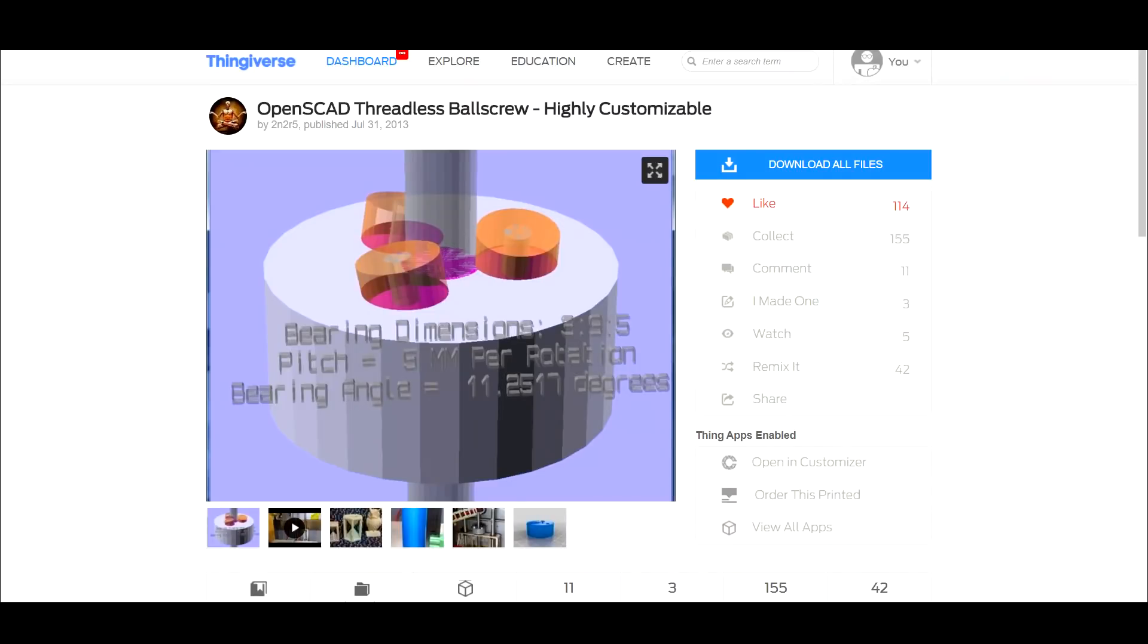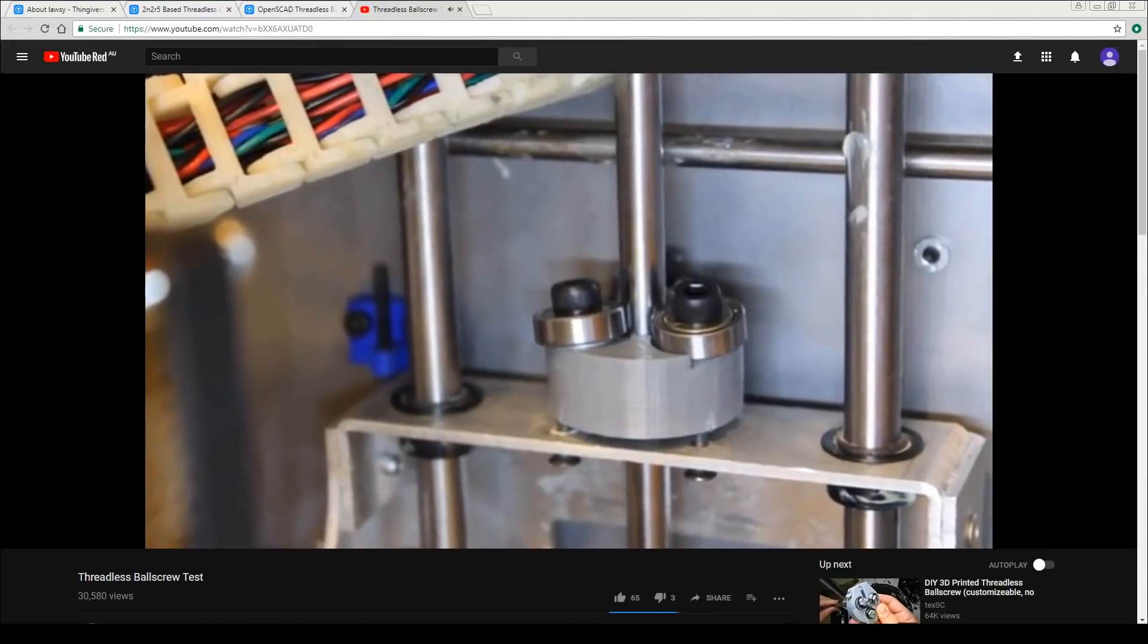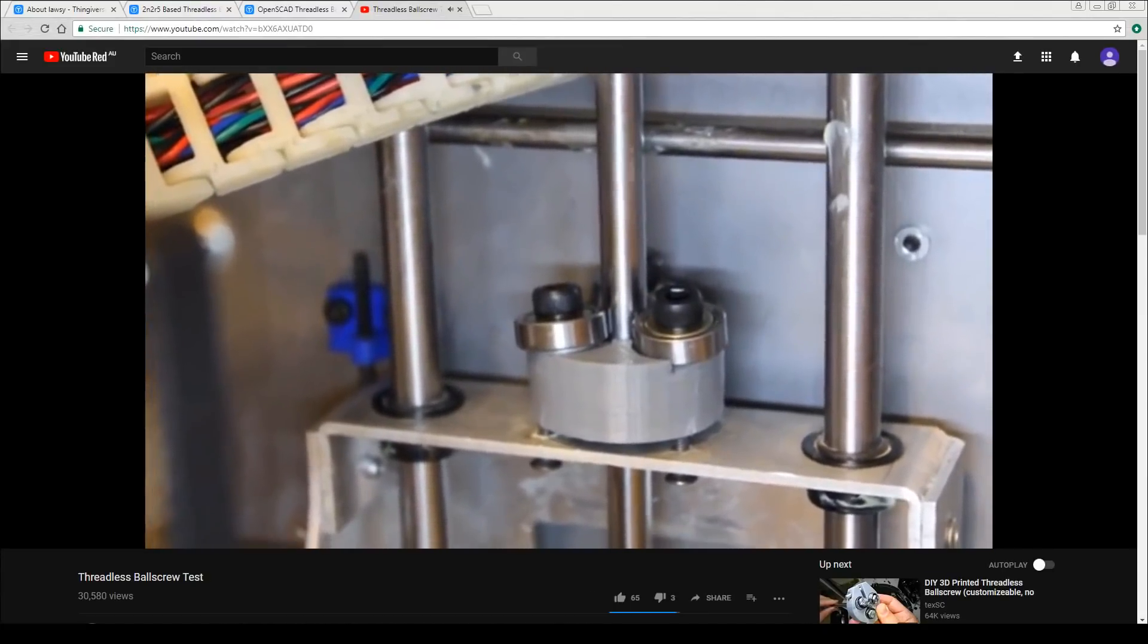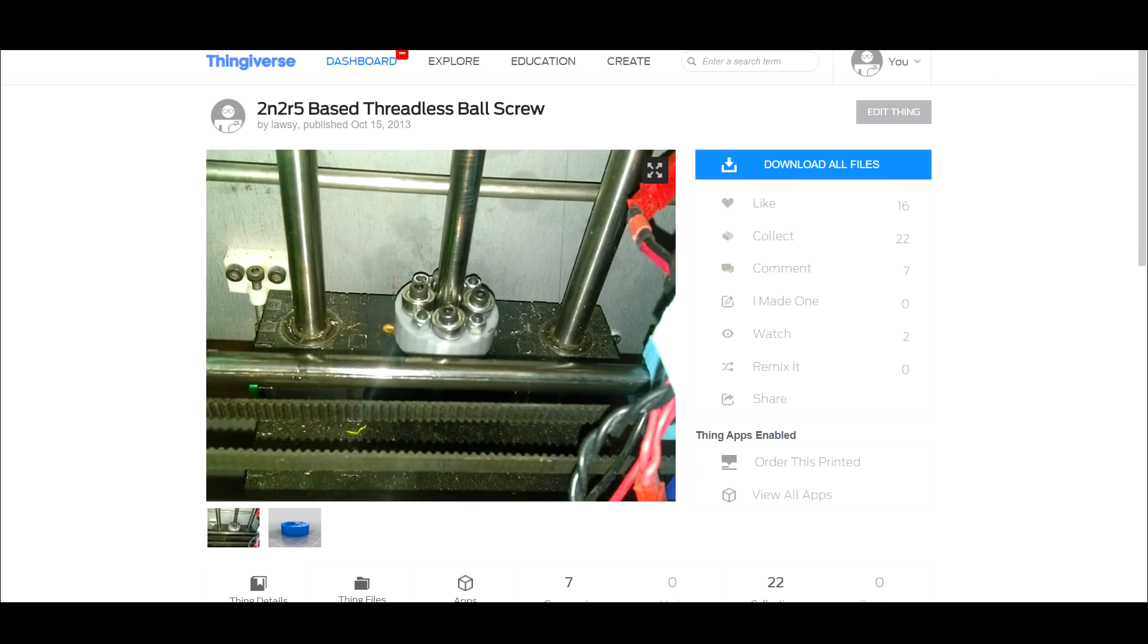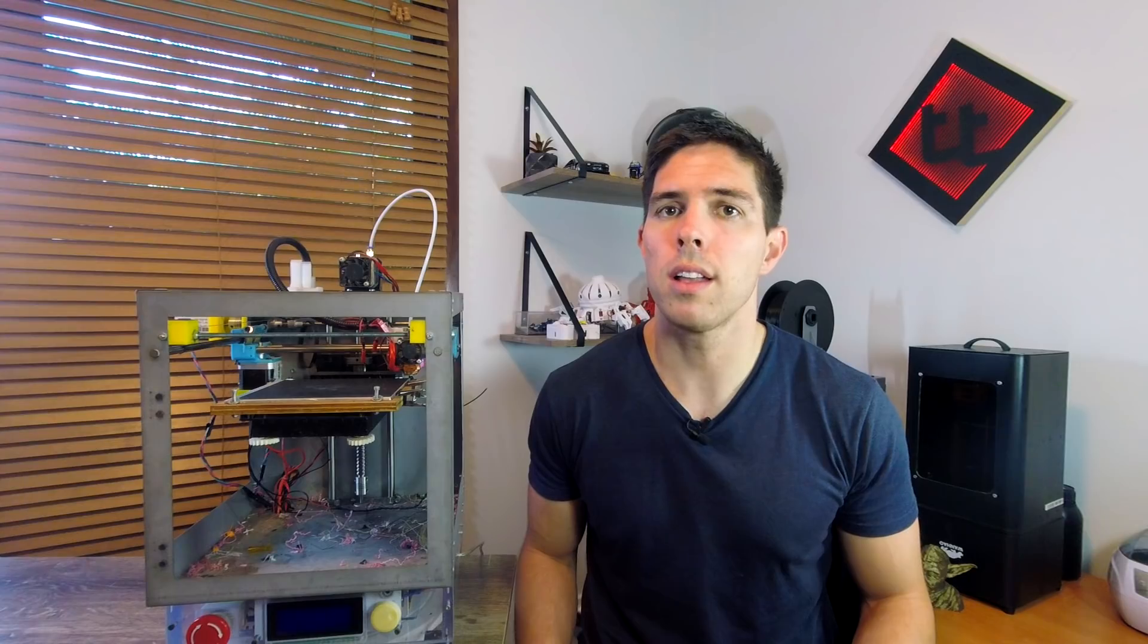Community member 2N2R5 released a threaded ball screw. This used one of the polished hardened rods mounted in a package with bearings and it spun around magically despite there being no thread. I remixed my own version and it worked pretty well for a while, but eventually it wore and I switched to the ball screw that you see here.